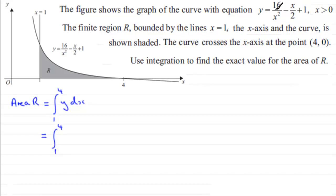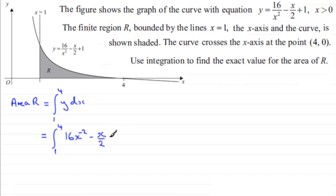To integrate this I need to modify my terms. 16 over x squared can be thought of as 16 multiplied by 1 over x squared, and 1 over x squared is x to the power of minus 2. For the next term, minus x over 2, that's the same as minus a half x — I'll still leave it as x over 2 but think of it as minus a half x. And then we've got plus 1. We're integrating all three terms with respect to x, so do put that in brackets.